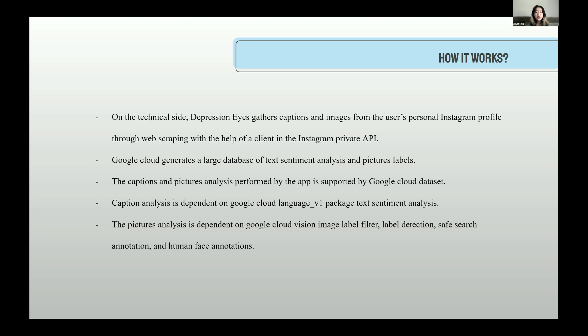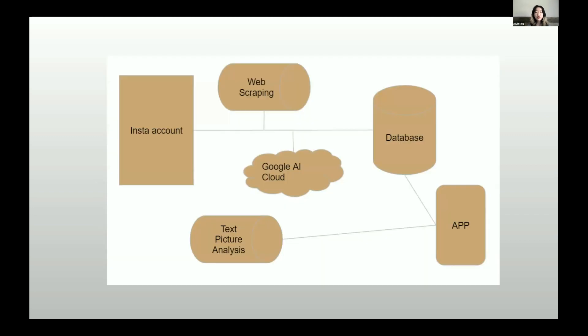Here is a flowchart of the working process. First, the user needs to have an Instagram account ready. Then the program will web scrape and store all posts including the captions and pictures. Then I use the Google AI Cloud to get a database for picture and text analysis. Then I build the app using Flutter.